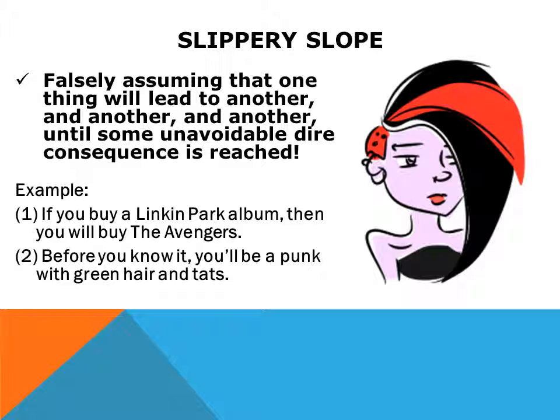Consider this example. If you buy this punk album, then you will buy the Avengers. Before you know it, you will be a punk wearing green hair and tattoos. The events do not have to happen in this order. It may be that I buy the album and enjoy listening to it. But not with the slippery slope fallacy — it has to keep going and going until something bad happens.